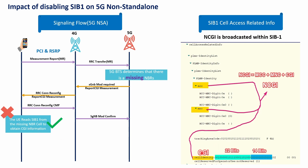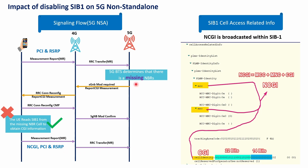Once the UE reads the SIB1 information, it will report a measurement report now covering the NCGI information along with the PCI and RSRP — previously it only had PCI and RSRP. This information is transferred to 5G, and once received, the 5G gNB can add the missing neighbor based on the CGI feedback.